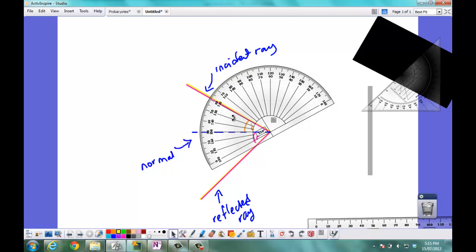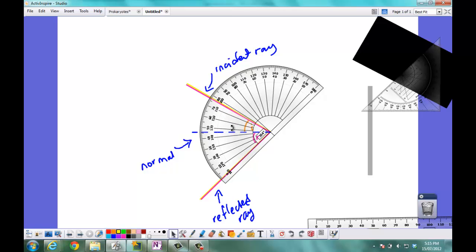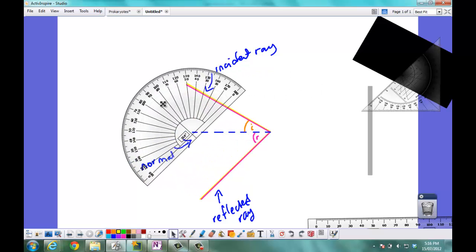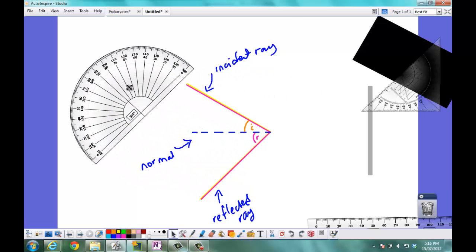Now all I need to do is turn the protractor around and in my case the angle of reflection measures 46 degrees. Now if I had constructed my diagram properly I would have actually found that the angle of incidence and the angle of reflection were the same. But obviously I have not constructed my diagram very accurately. Hopefully you'll be doing a better job of this yourself.